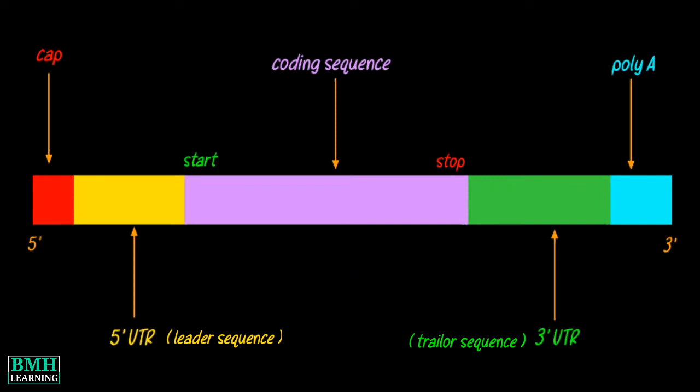An untranslated region refers to either of two sections, one on each side of a coding sequence on a strand of mRNA.